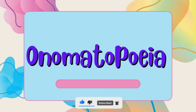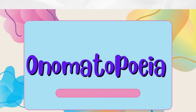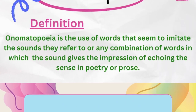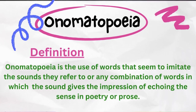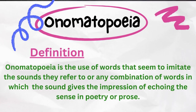Don't forget to press the bell icon. Onomatopoeia کا مطلب ہے ایسے الفاظ کا استعمال کرنا جو کہ ہماری سینس آف ہیئرنگ یعنی ہماری سننے کی حس کو اپیل کرے، یعنی جس میں کسی چیز کی sound یا آواز کا ذکر کیا جائے۔ اب ہم اس کی definition پڑھتے ہیں۔